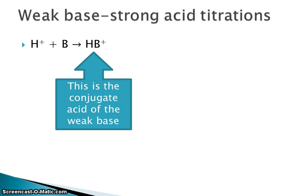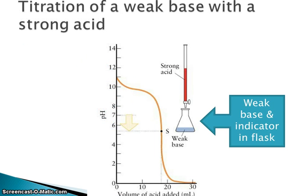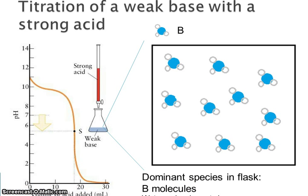The last topic is weak base-strong acid titrations. I have H⁺ from the strong acid being added to the base, making the conjugate acid of the weak base as the reaction occurs. The flask contains the weak base and an appropriate indicator; the strong acid is in the buret. My initial pH is quite high and will get lower through the titration. The dominant species in the flask is the base molecule — set up analogously to ammonia — with water molecules left out for clarity.